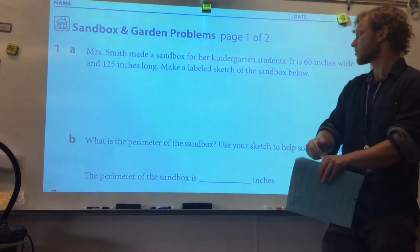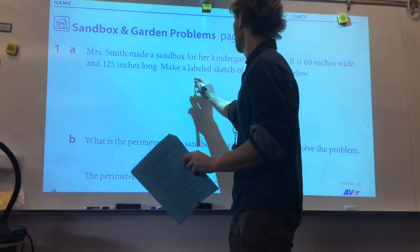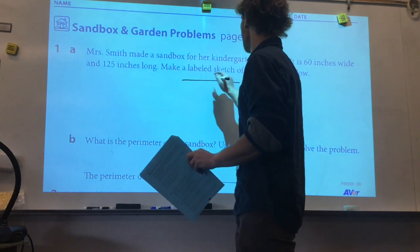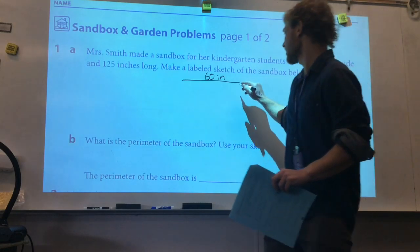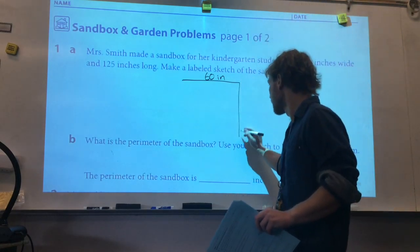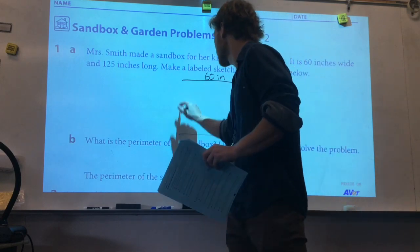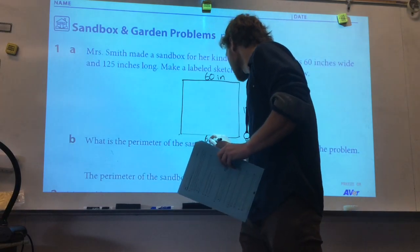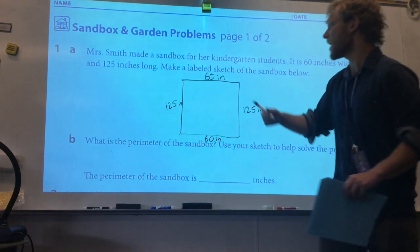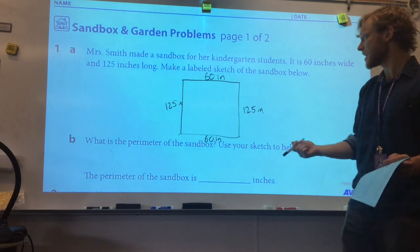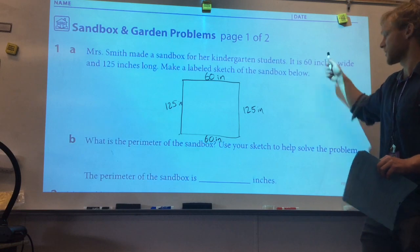So first up, let's draw our sandbox. We know its dimensions: it's 60 inches wide, so 60 inches wide, and we know it's 125 inches long, and we'll complete it: 60 inches, 125 inches. So we have our sketch, and it's labeled, meaning we've given the dimensions their actual dimensions.